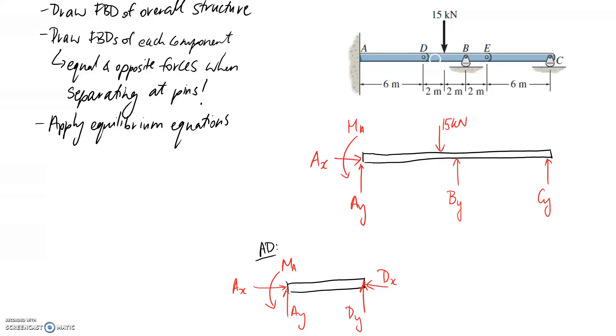So that's the free body diagram of just AD. If I now jump on and do the free body diagram of DE. So, again, we need to transfer down the external stuff. So we're going to have the 15 kilonewtons coming down here. And we also have the support at B in this section. So this is BY.